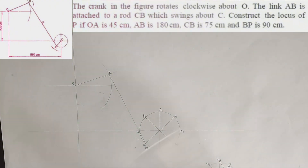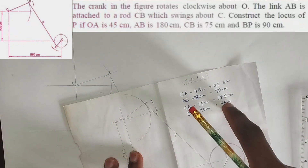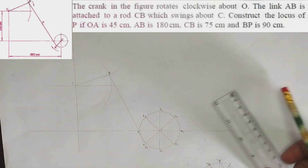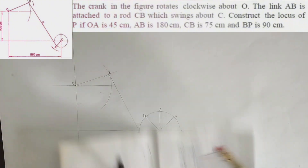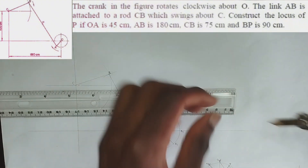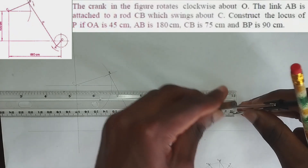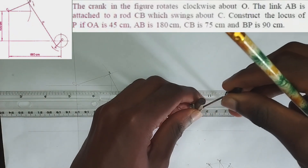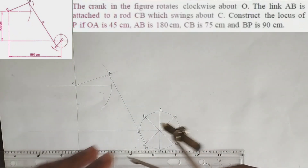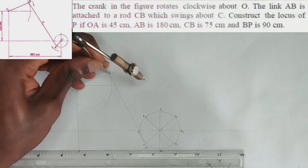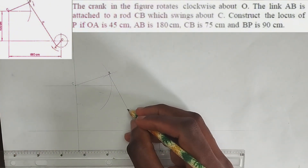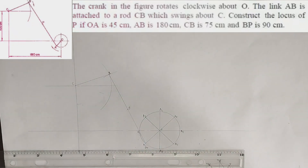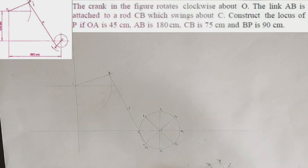Without forgetting point P — which is the locus point we are asked to draw — we have been told that BP is 45 and P is on this straight line. I'm going to pick 45 millimeters and place it at point B then strike. This point here is our point P.